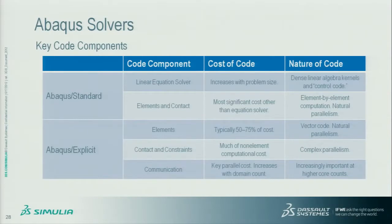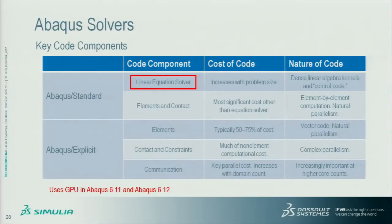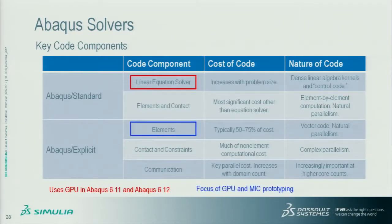The other parts of Explicit that are important are contact, constraints, and communication between nodes. The first step we've taken with GPU is to enable GPU execution for the linear equation solver — it's the most expensive thing, it's not a lot of code, and it's really the obvious first step to take with GPU. The next thing we're looking at is whether we can get the Explicit elements to run effectively on GPU. This is a non-trivial challenge, and if we can get it working, we're very likely to get a lot of the rest of the code base to run on GPU as well.